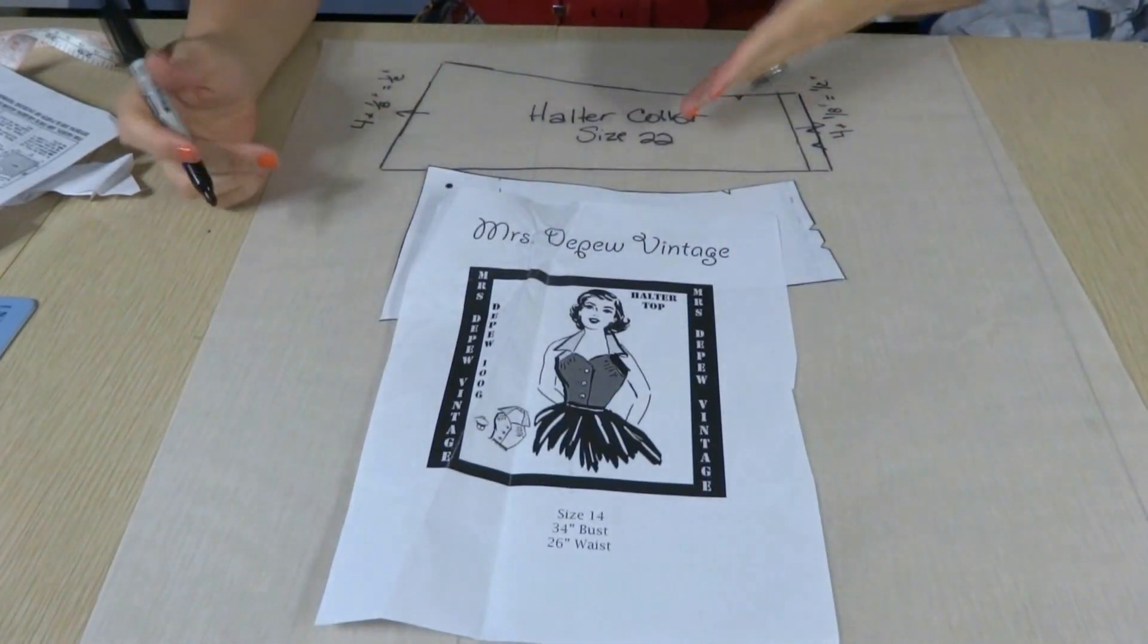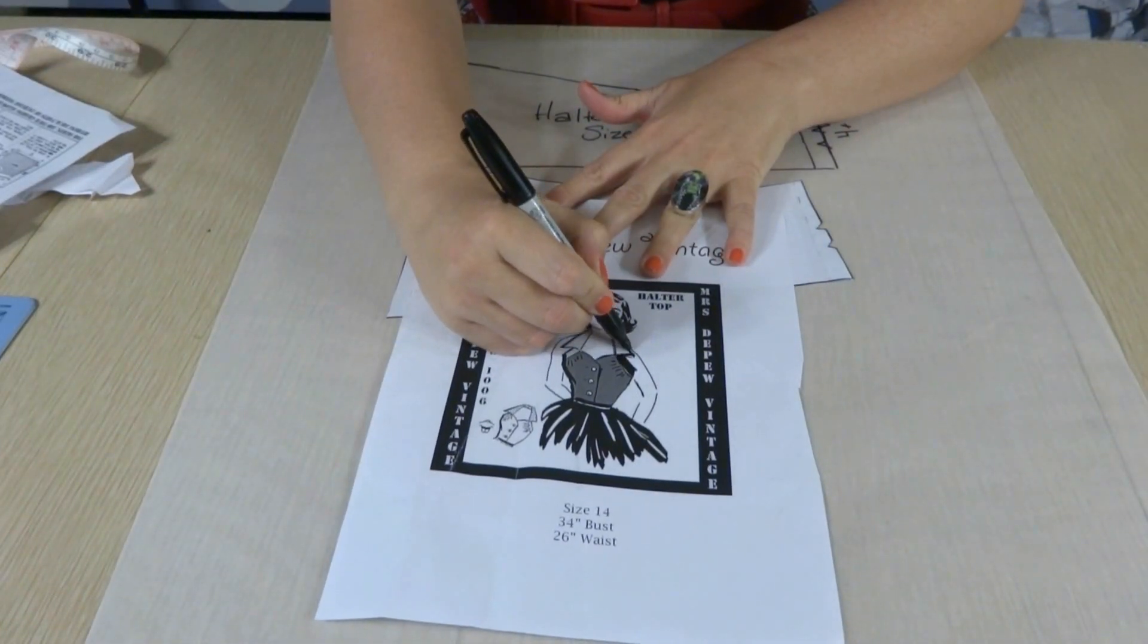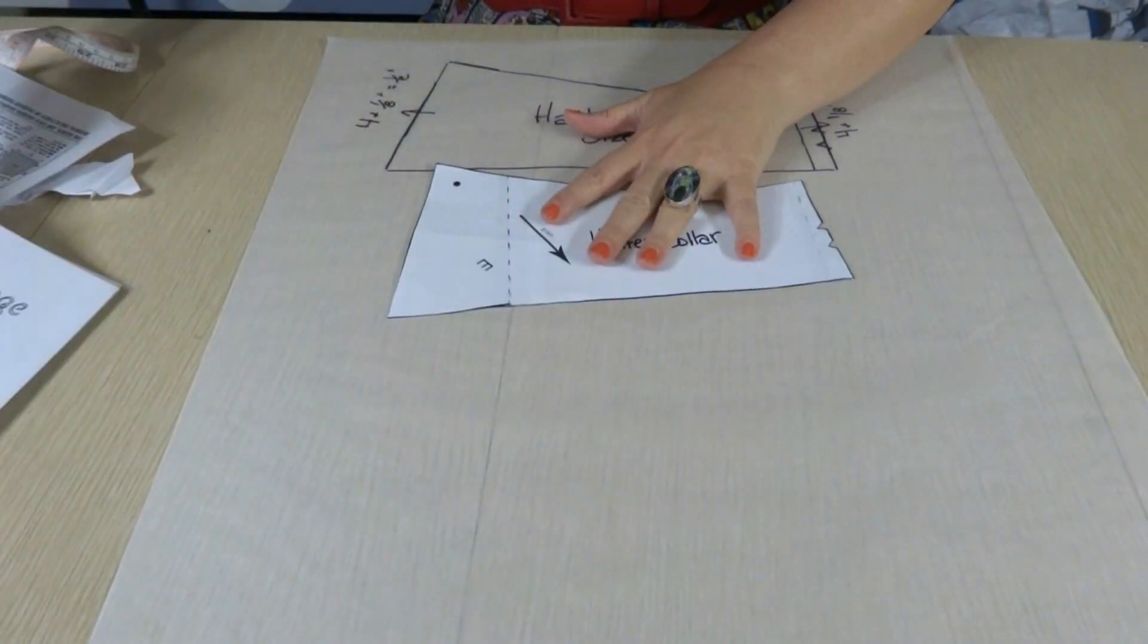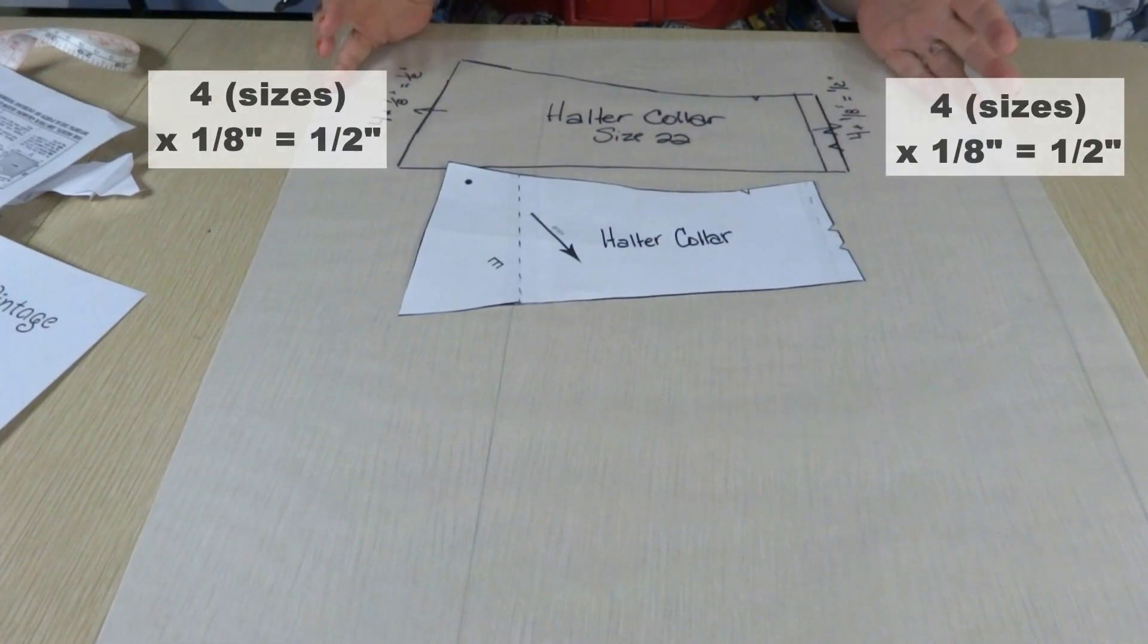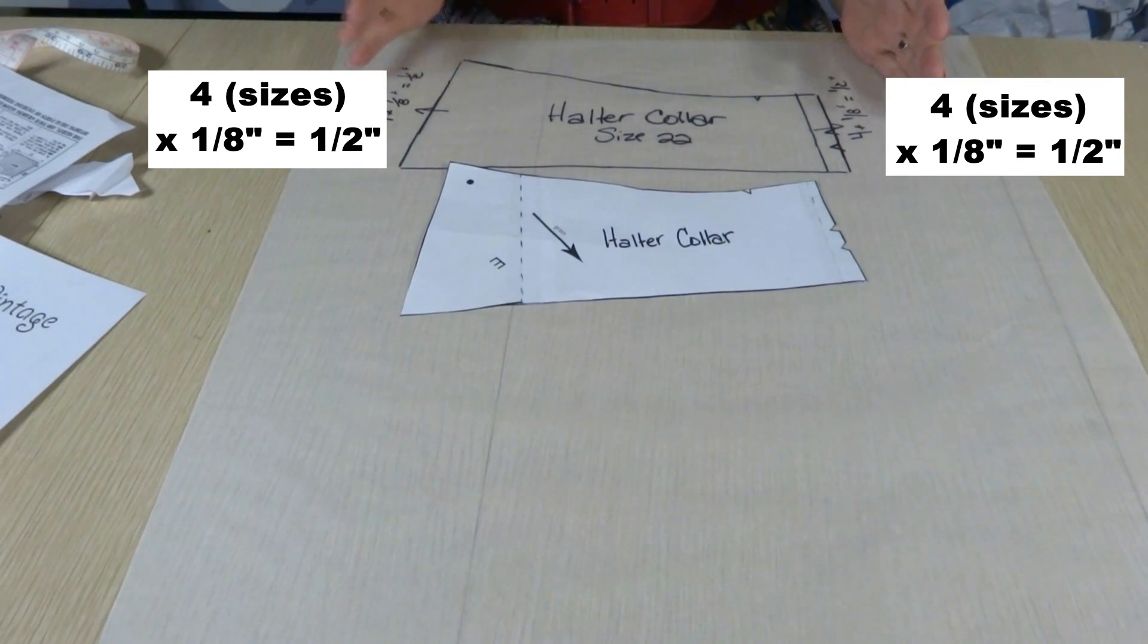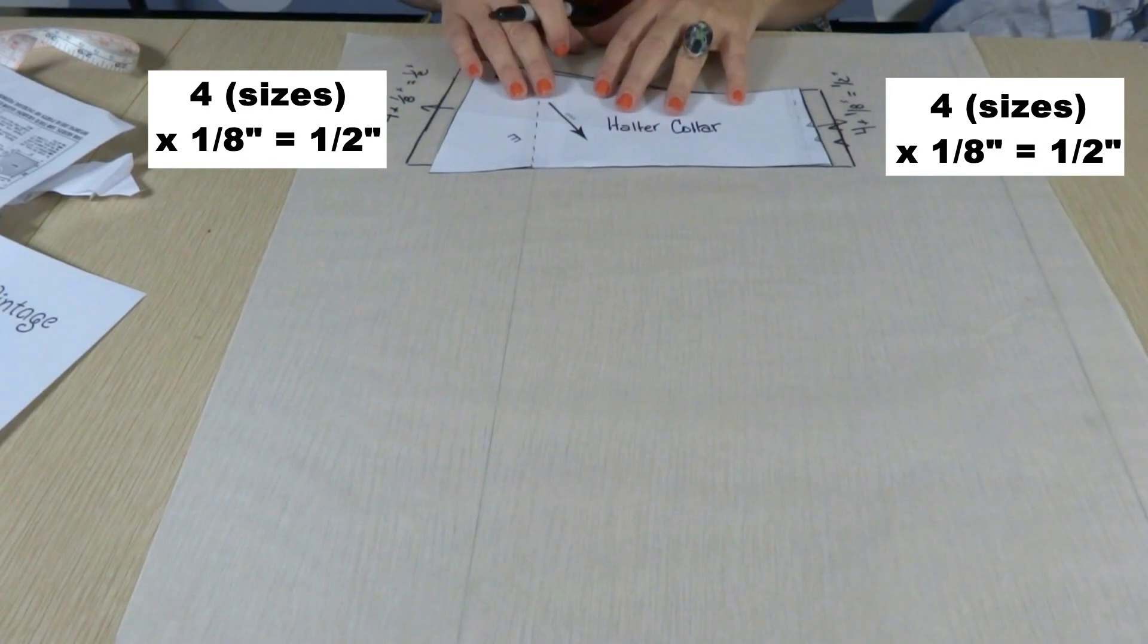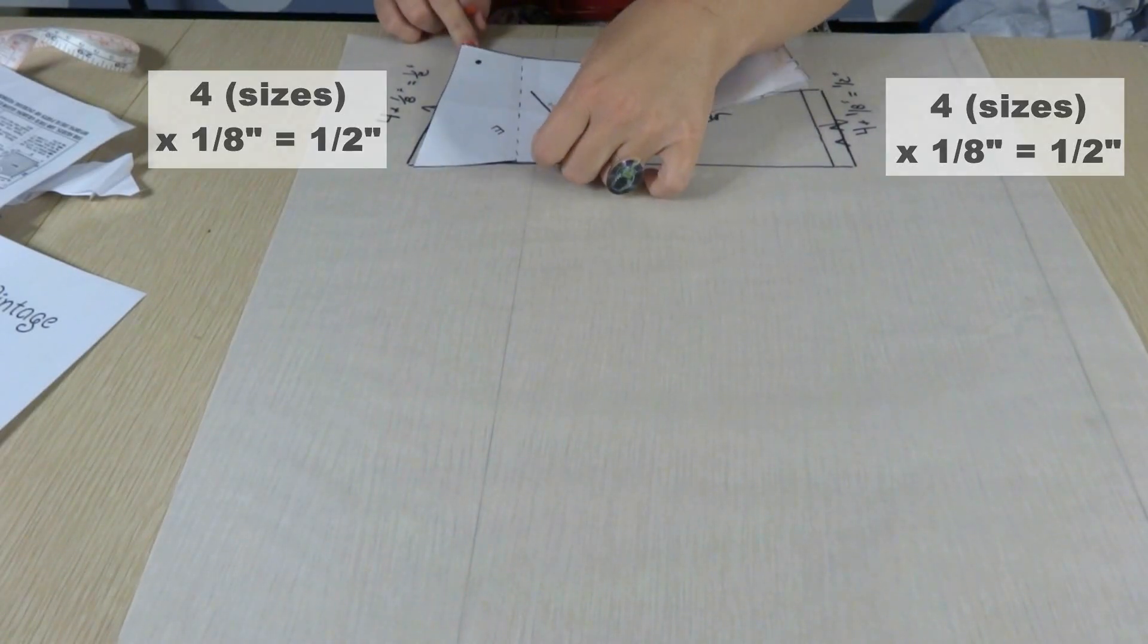And lastly, we have our halter collar, which is this piece right here. Again, it doesn't need to be widened, but it does need to be lengthened to match our new measurements. So once again, an eighth of an inch on each side of the halter collar. So a half of an inch going each way. And once again, always start your tracing with that being on the center point, then move it over to complete it.